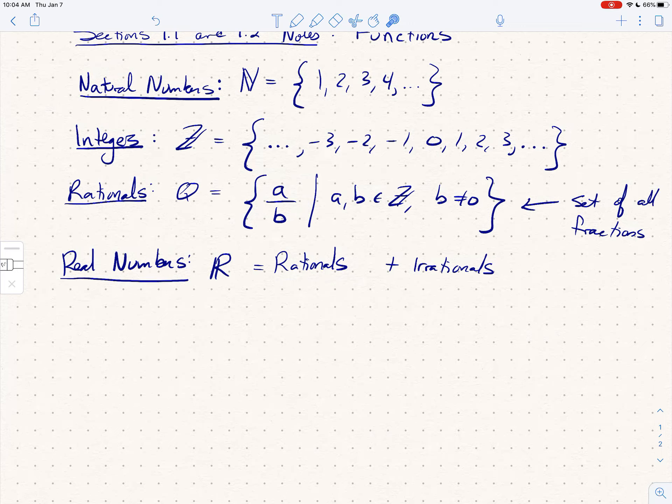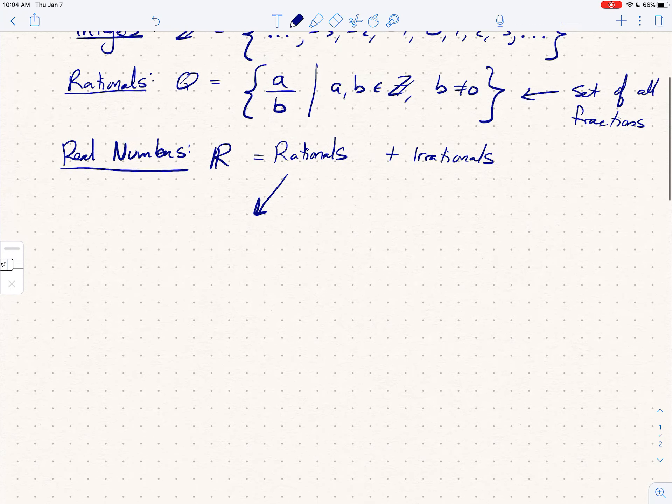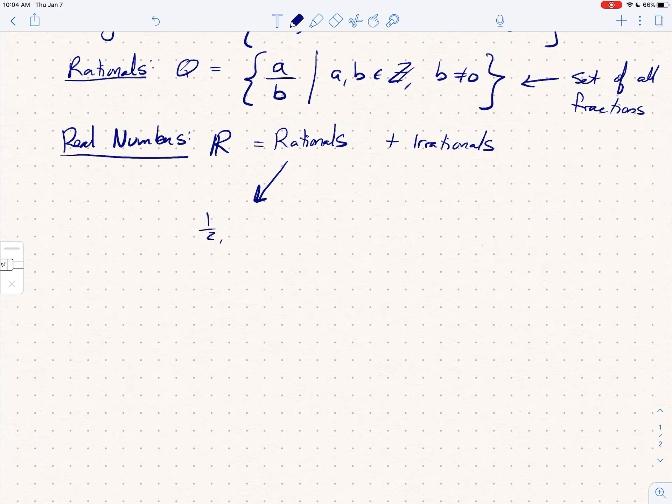And if you want to think in terms of decimals, they're all the numbers whose decimals either terminate or repeat. And the irrationals are just the numbers that don't do that. So for example, a rational number you might have 1/2 or 1/3 or 2, so on and so forth. For irrationals, we have numbers like pi, root 2, root 3, so on and so forth.